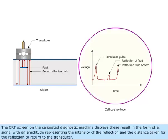The CRT screen on the calibrated diagnostic machine displays these results in the form of a signal, with an amplitude representing the intensity of the reflection and the distance taken for the reflection to return to the transducer.